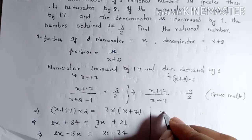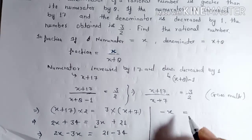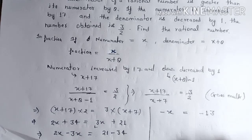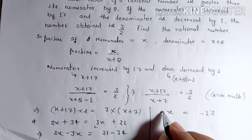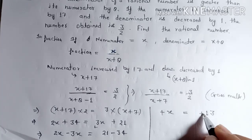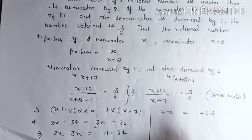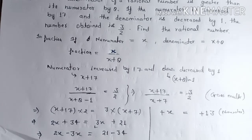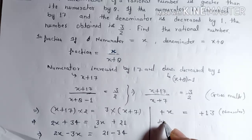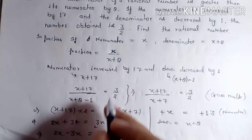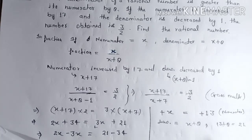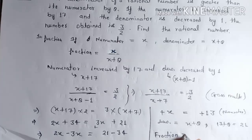You will get minus x equals minus thirteen, so x is plus thirteen. The numerator is thirteen. The denominator is x plus eight, so thirteen plus eight equals twenty-one. The fraction is thirteen upon twenty-one. This is the answer.